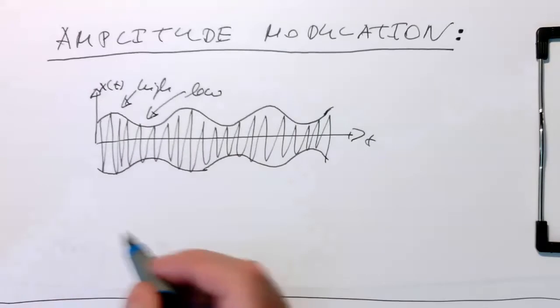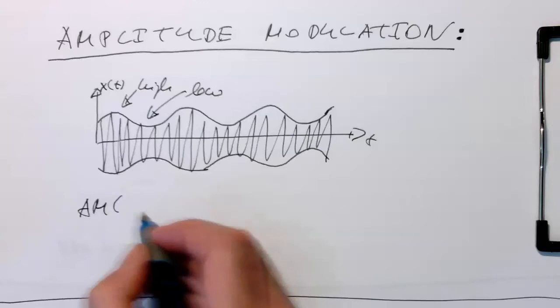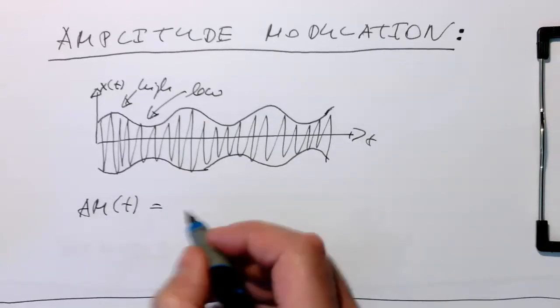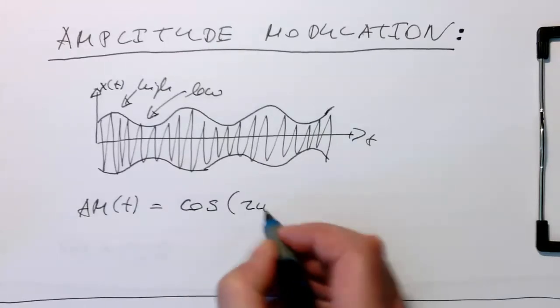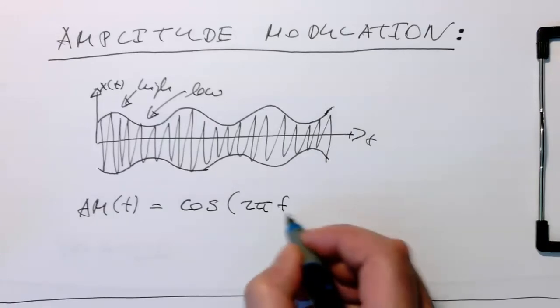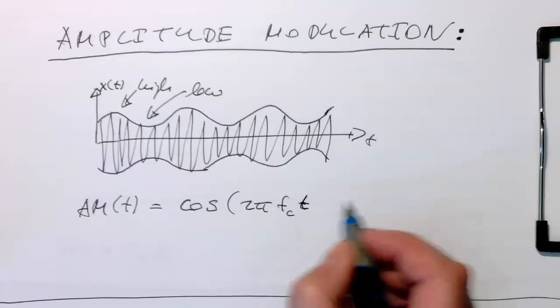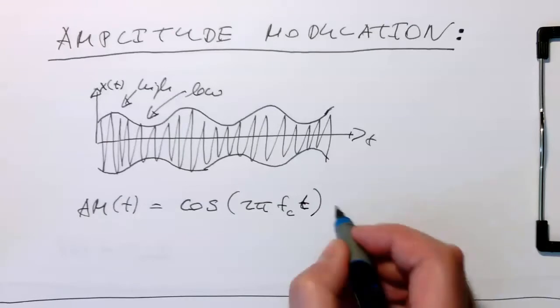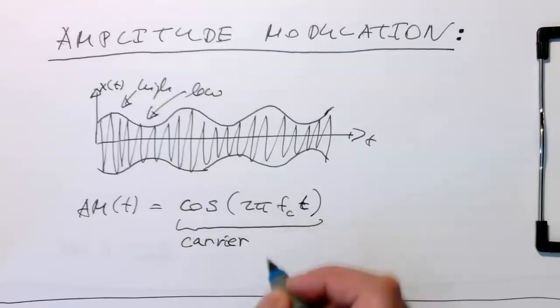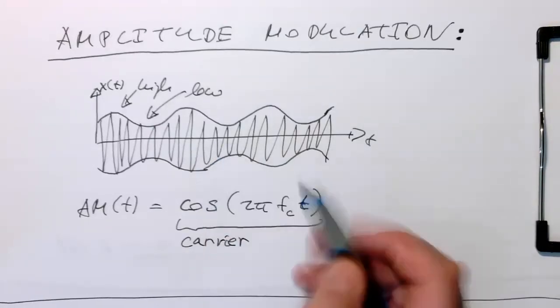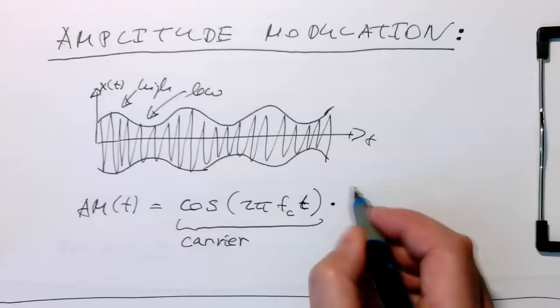And so the mathematical description of that is straightforward. So if we think of AM(t), we just take our carrier. That's the first thing in communications. Usually the carrier is denoted by the cosine. We spare the sine for later for reasons I'll explain later. But let's stick here with cosine. So that's our carrier, these oscillations here.